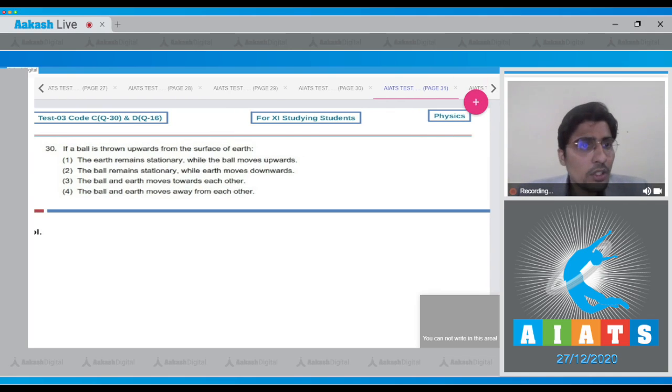Moving on to question number 30. Question 30 says, if a ball is thrown up vertically from the surface of earth, then there are four options that are given to us. The earth remains stationary while the ball moves up. The ball remains stationary while the earth moves downwards. The ball and earth move towards each other. The ball and earth move away from each other. Dear student, as per the conservation of momentum, the ball and the earth will both move away from each other. However, the velocity or the displacement of earth is negligible and hence, we can only observe the ball in this case. Therefore, for this question, the correct answer is option number 4.